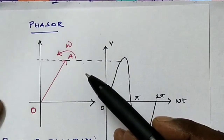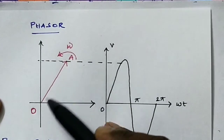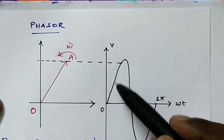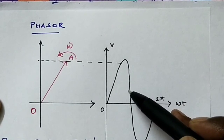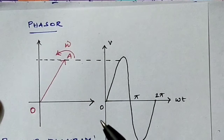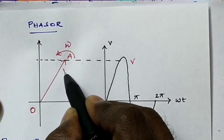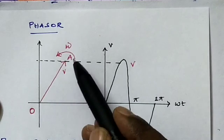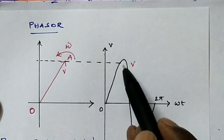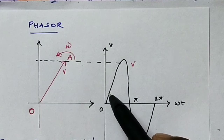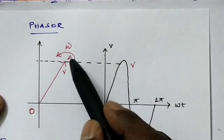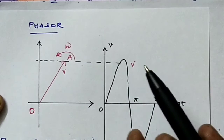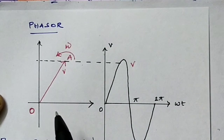The phasor is drawn in such a way that the length of the line segment is equal to the peak value of the alternating voltage — that is Vm, or Im for alternating current. The length of the line segment equals the peak value of the alternating voltage. And the angular velocity omega is equal to the angular frequency of the alternating current or alternating voltage.